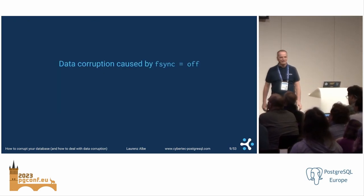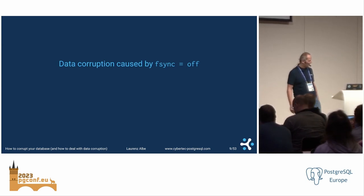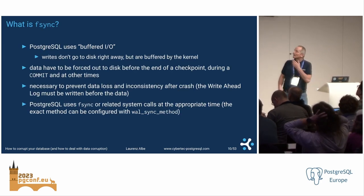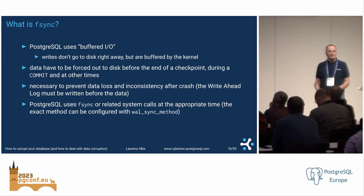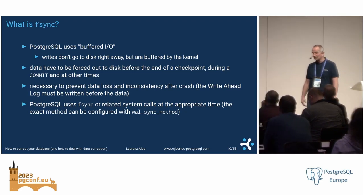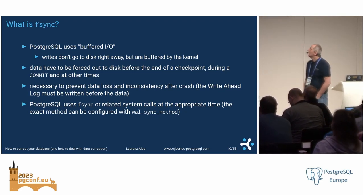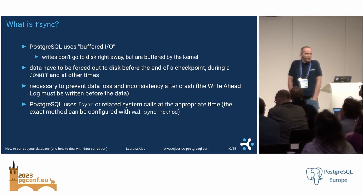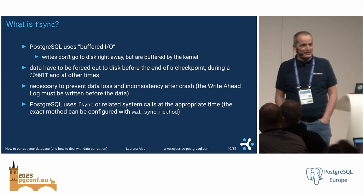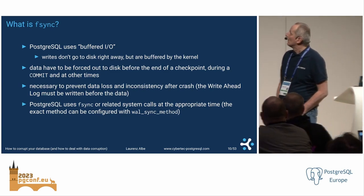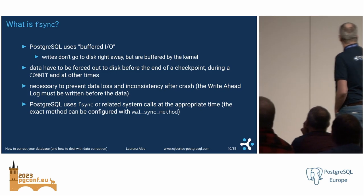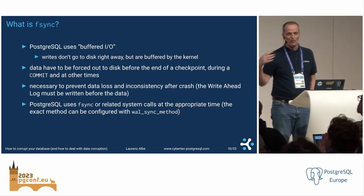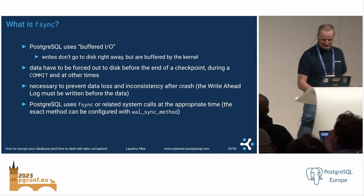Number one is fsync equals off. Postgres doesn't directly write to disk — it does buffered writes, so we have to flush out data during checkpoints at commit time to maintain consistency. WAL always has to be written before the data.